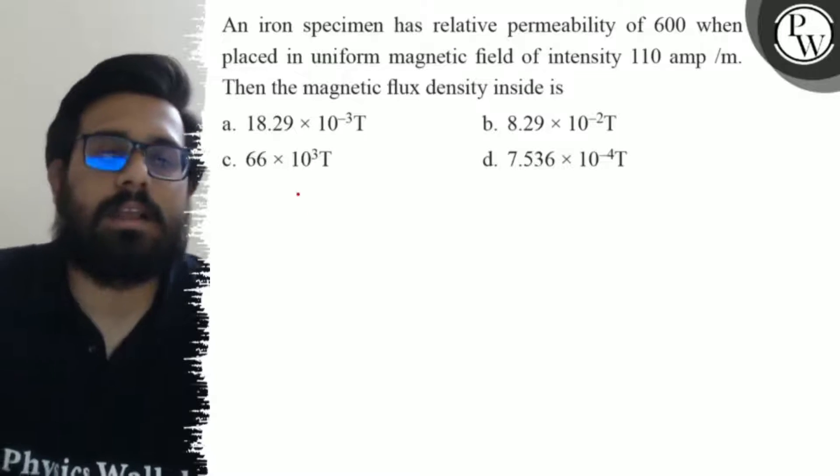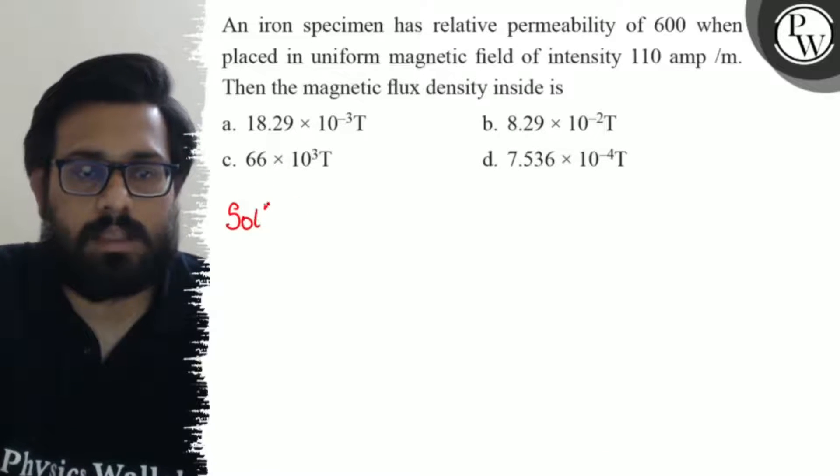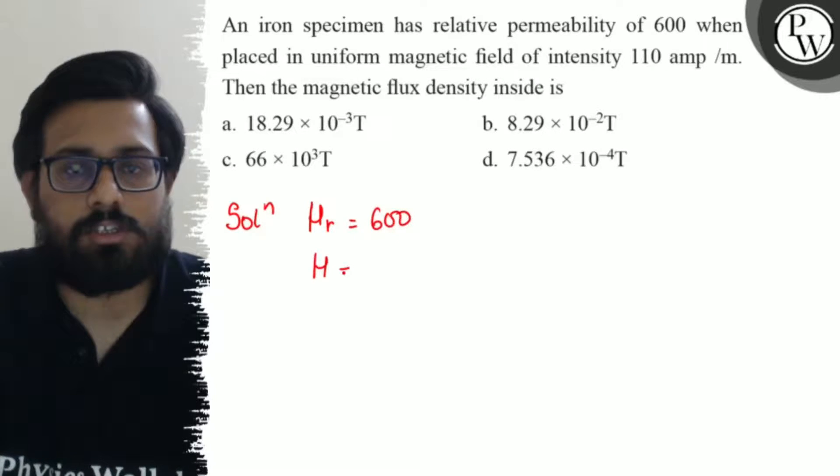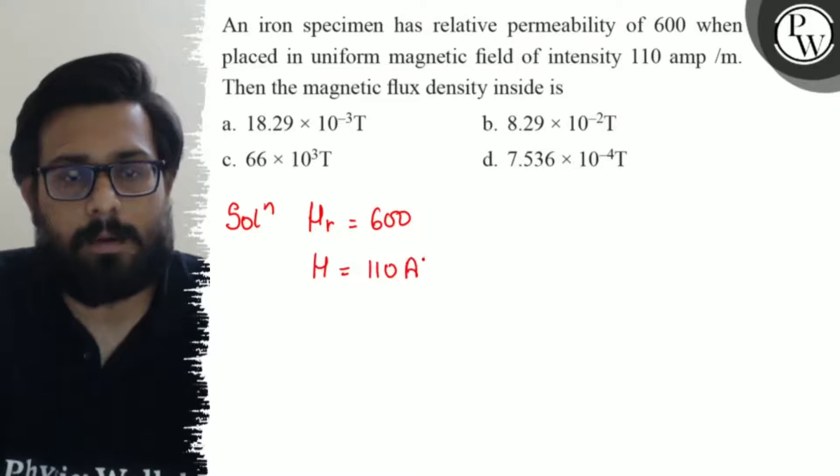So here in this problem, what are the given data? Relative permeability we have 600, the value of H is given as 110 ampere per meter, and we have to find the value of B.